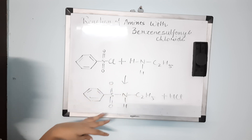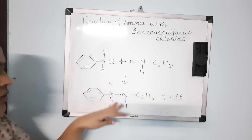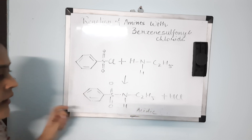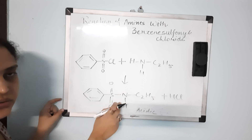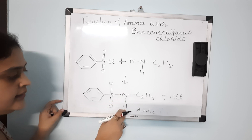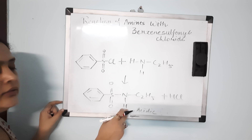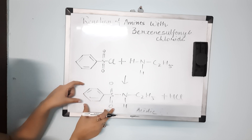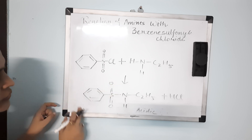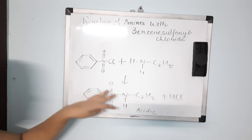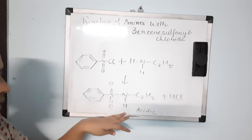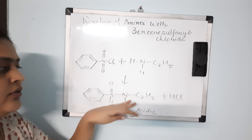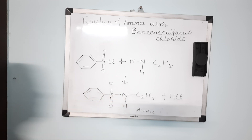This product is soluble in alkali because it is acidic in nature. It is acidic because the hydrogen atom attached to the nitrogen is readily removed due to the electron-withdrawing sulfonyl group attached to benzene. Because of this electron-withdrawing effect, the molecule becomes acidic, and therefore it is soluble in alkali.